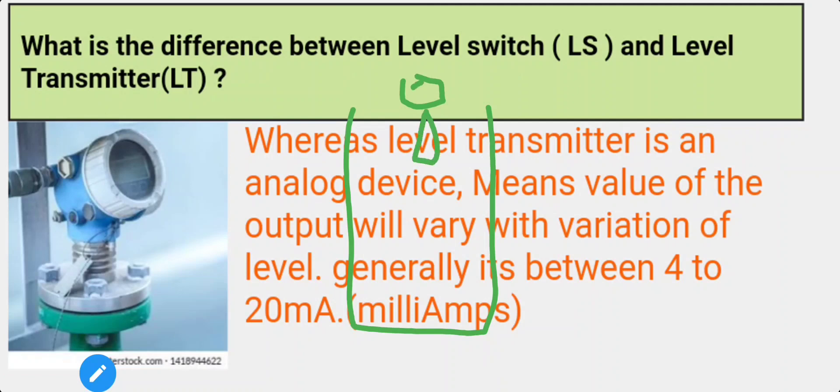Level transmitter installed. Now this level transmitter, calibration engineer will calibrate according to its zero and span. And based on its level, it will give you the output in terms of milliamps.